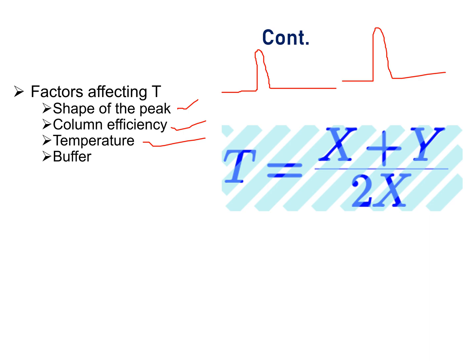Some molecules like basic molecules or macromolecules like erythromycin or azithromycin make it difficult to get a symmetrical peak. In that case, a tailing factor more than 1.5 is also acceptable. Hence, we can say that tailing factor depends upon the structure of the molecule.